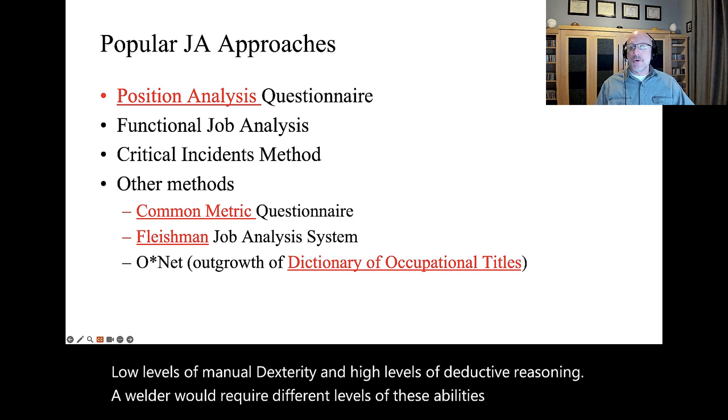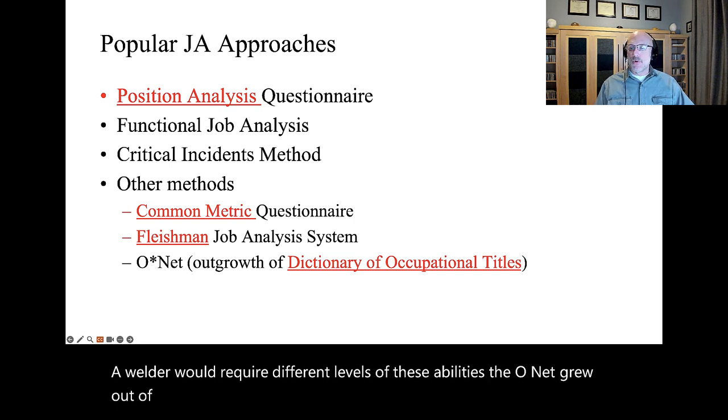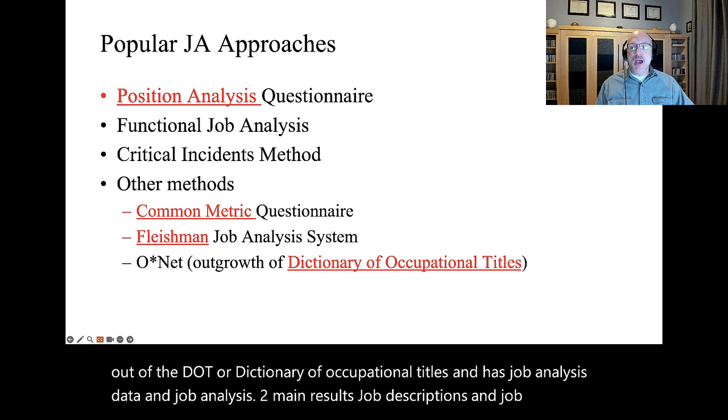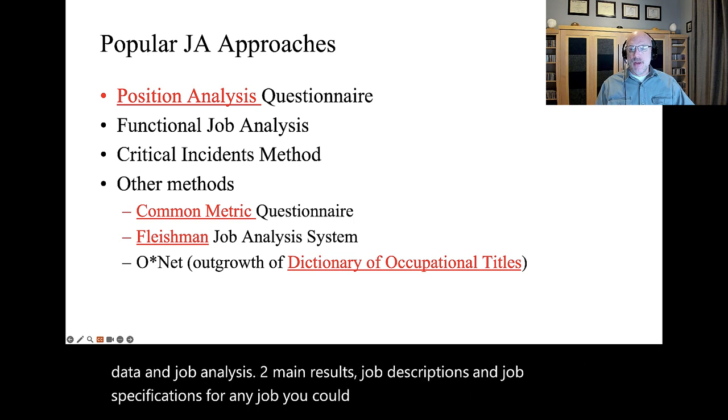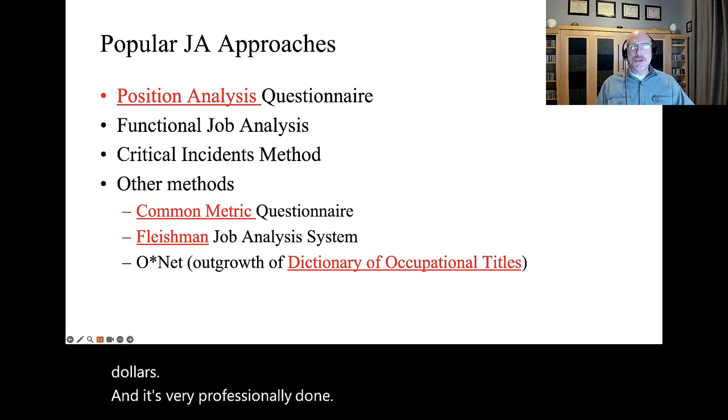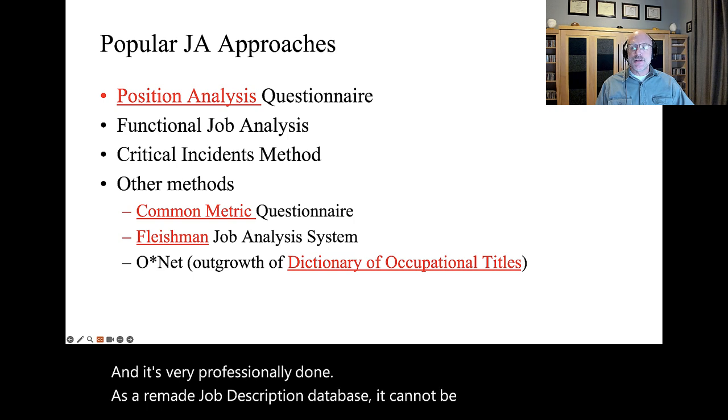The O-Net grew out of the DOT, or Dictionary of Occupational Titles, and has job analysis data and job analyses, two main results, job descriptions and job specifications, for any job you could possibly think of. This should be the first stop for small businesses. It's free, well, it's supported by your tax dollars, and it's very professionally done. As a pre-made job description database, it cannot be beaten.